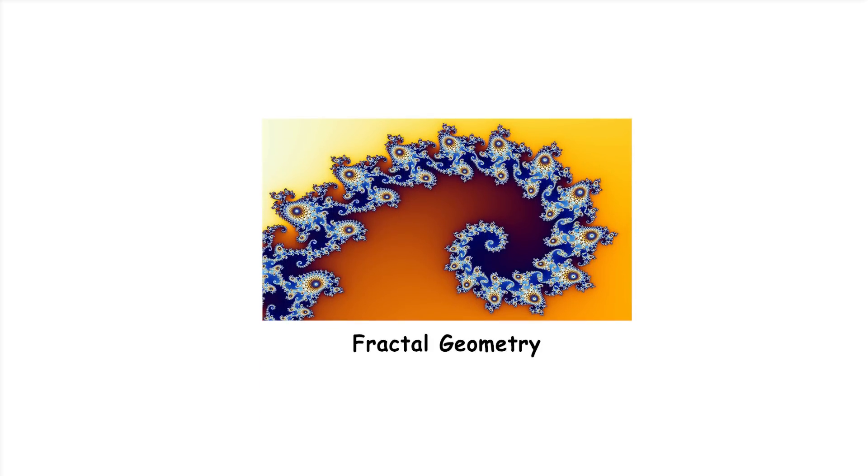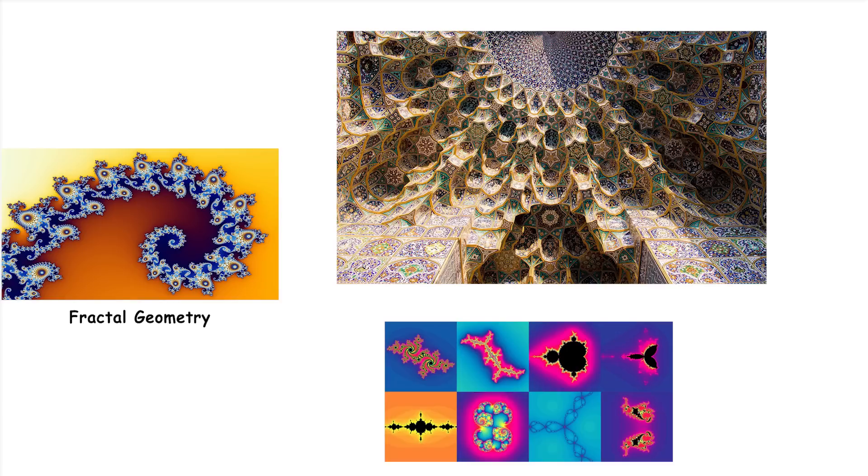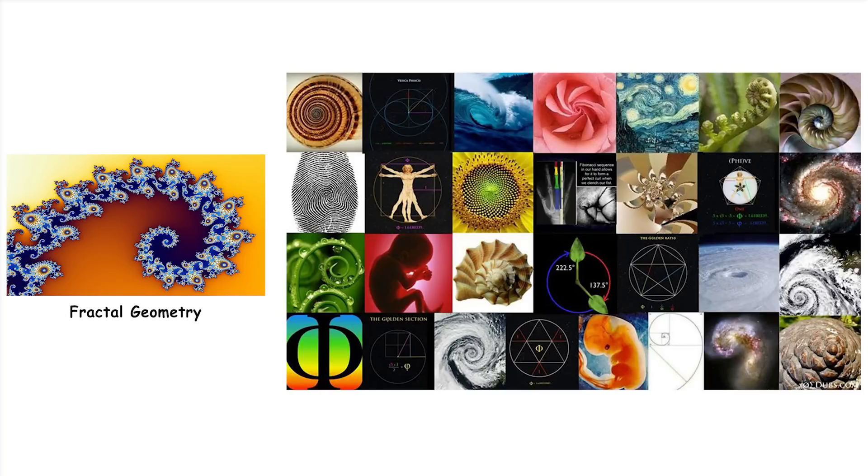Fractal Geometry. Fractal geometry studies shapes that are self-similar at different scales, meaning they look similar no matter how much you zoom in or out. Fractals are complex patterns that are found in nature, such as in the branching of trees, the structure of snowflakes, and coastlines.